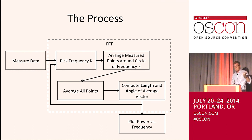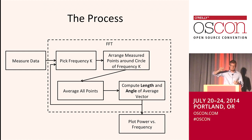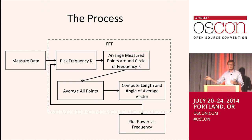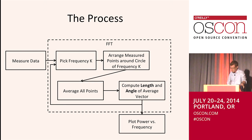In a block diagram: we measure the data, pick a frequency, arrange our points around a clock traveling at that frequency, average all the points to get an average vector, look at the length of that average vector, and save that measurement. We also look at the angle of that vector — we call that the phase. For 95% of what you'd ever want to do, you really don't care about the angle.